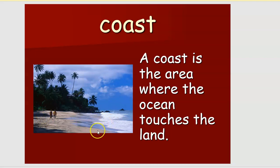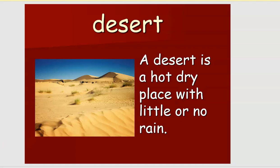What is a coast? The coast is the area where the ocean touches the land. The meeting point between the ocean and the land is called a coast. What is a desert? A desert is a hot and dry place with little or no rain. Everyone knows deserts are the hottest areas. The tree that grows in a desert is the cactus.